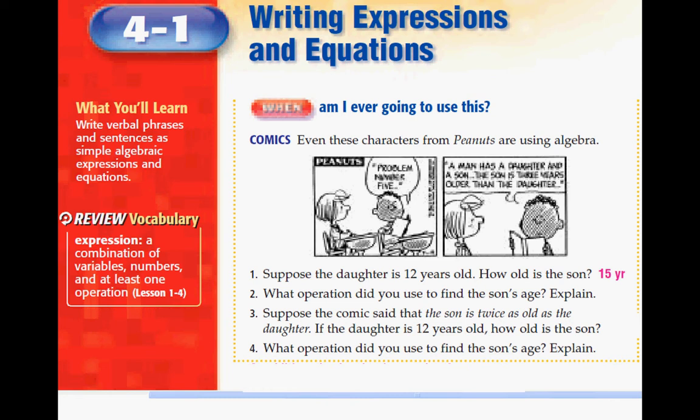Then for number three, suppose the comic said that the son is twice as old as the daughter. If the daughter is 12 years old, how old is the son? This is where highlighting and using key words is important. So you could be looking at the word twice. Twice in this case means multiplication. So if the daughter is 12 years old, then that means that the son would have to be 24. And what operation did you use to find the son's age? That would be multiplication and you would get 24.